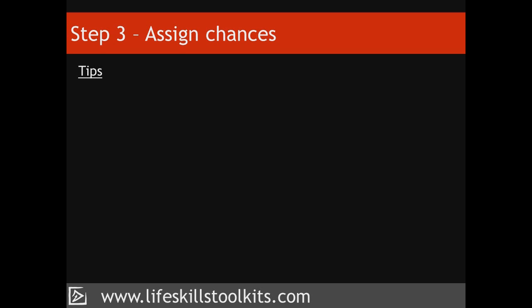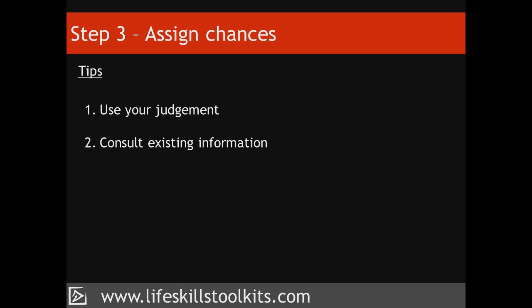When assigning chances to your outcomes, here are five things you can do to help develop an accurate probability. First, use your judgement – something we do every day based on knowledge and experience; if you feel your knowledge is lacking, consider the next four tips. Second, consult existing information – this is what Franny did when she visited websites containing prices of homes sold in her area. Third, collect new data – if Franny were to ask friends how much they'd pay for her house, that would be one way of collecting new data; yours might require asking the right people, similar to the market research companies do when they lack information they need.